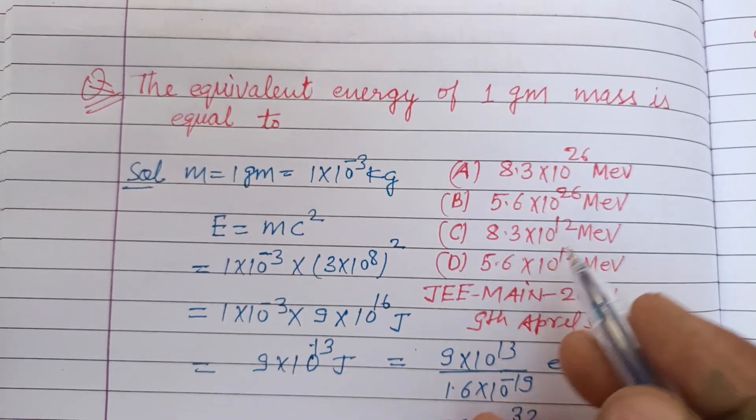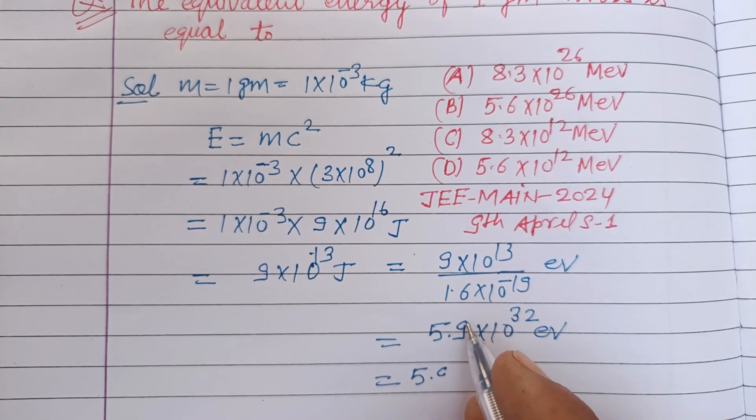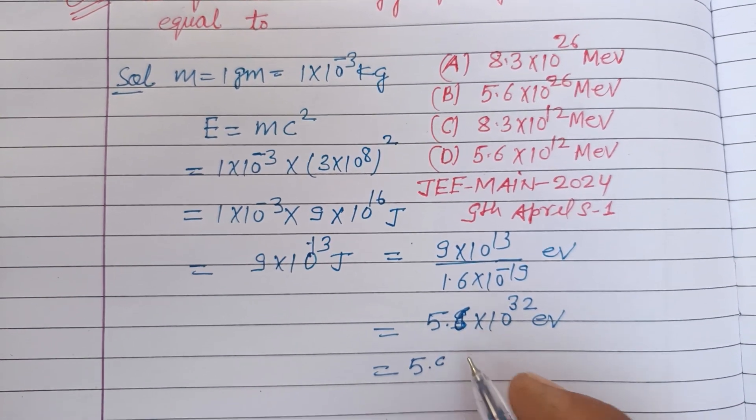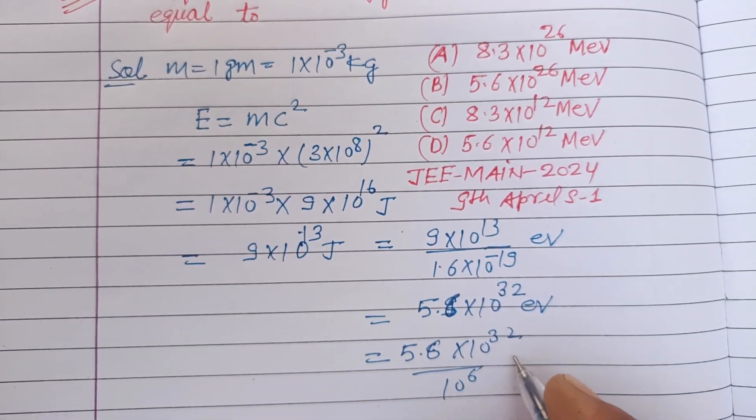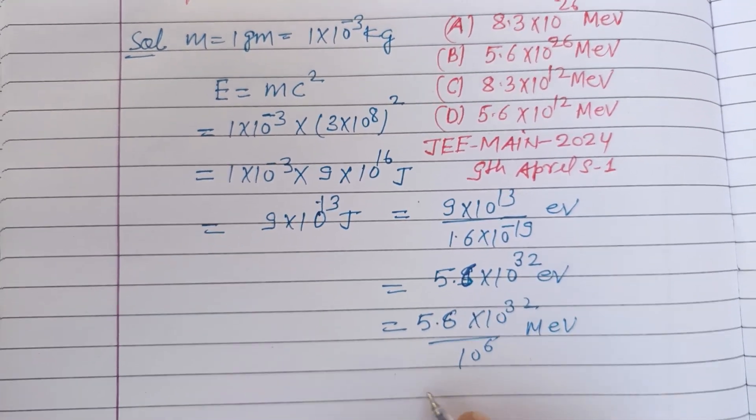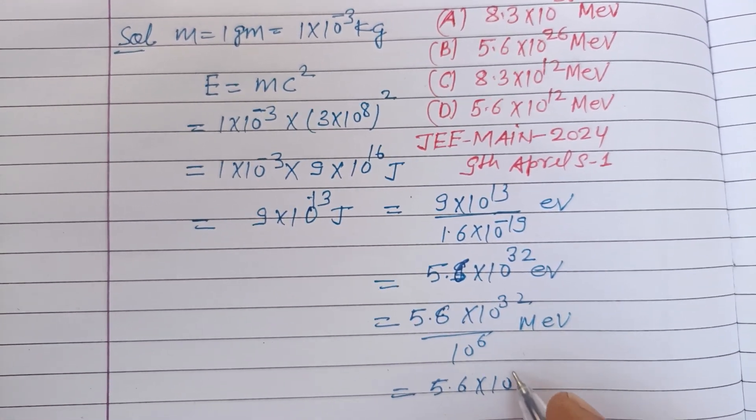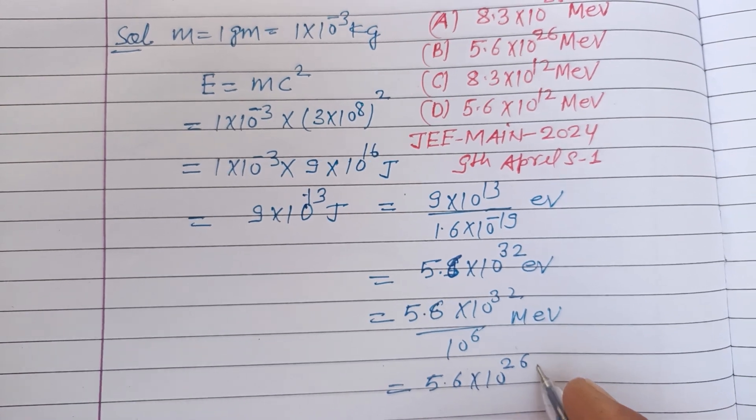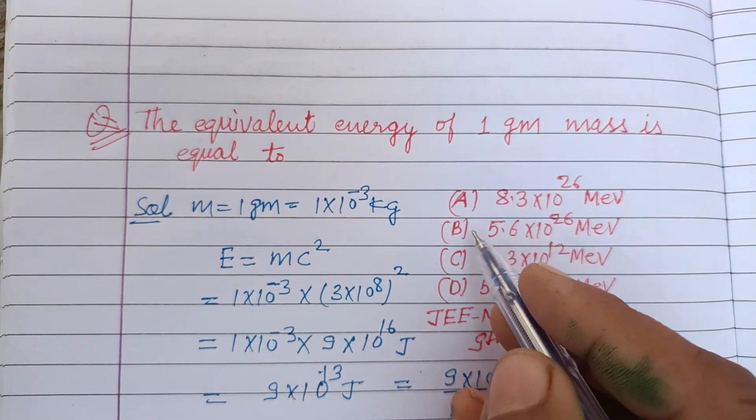Now we change it to million electron volts. So we have 5.6 into 10 to the power 32 divided by 10 to the power 6 when we change it to million electron volt. So this is 5.6 times 10 to the power 26 million electron volt, which is the correct answer of this question, found in option B.